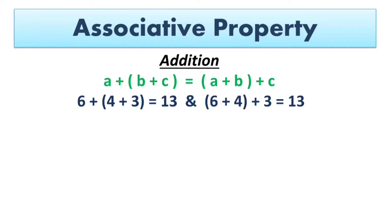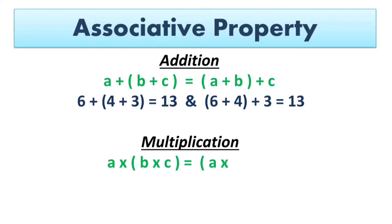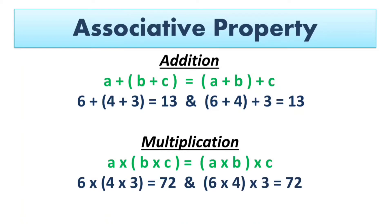In both types of grouping the answer is the same. For multiplication, we have A multiplied by (B multiplied by C) equals (A multiplied by B) multiplied by C. Verifying with an example: 6 multiplied by (4 multiplied by 3) equals 72, and (6 multiplied by 4) multiplied by 3 equals 72. In both conditions, in both groupings, the answer is the same.